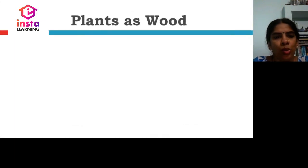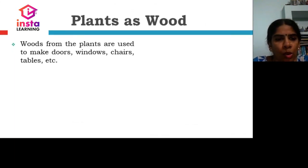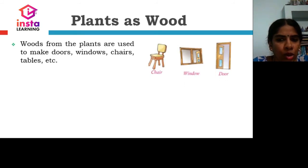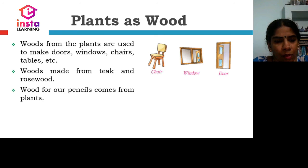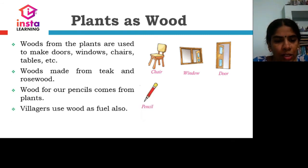Plants as wood. Wood from plants is used to make doors, windows, chairs, tables, etc. Good wood is made from teak and rosewood. Wood for our pencils also comes from plants. Villages use wood as fuel.